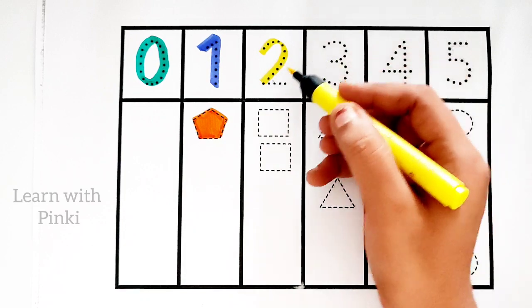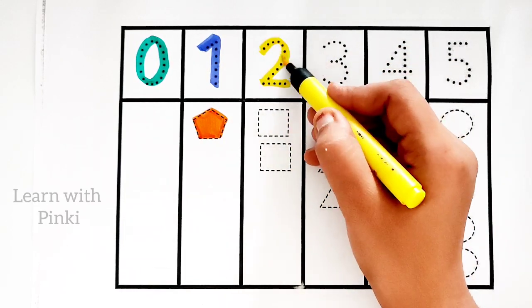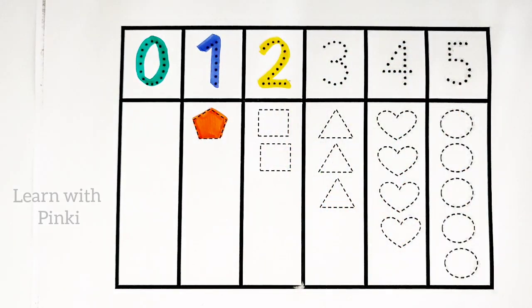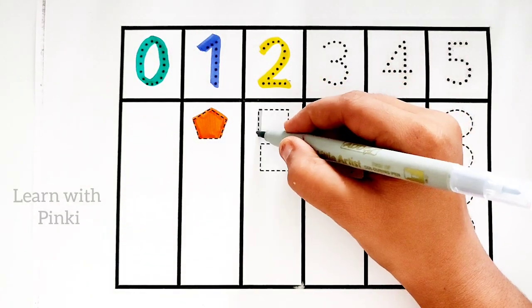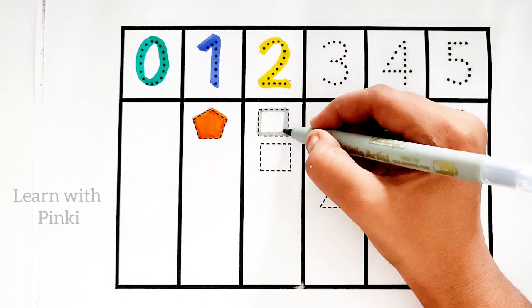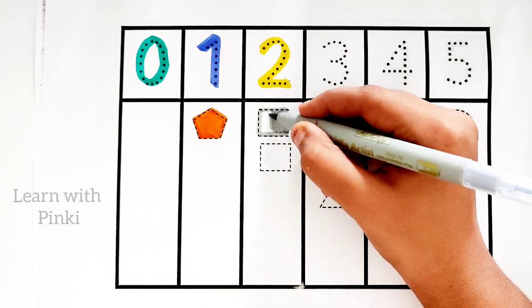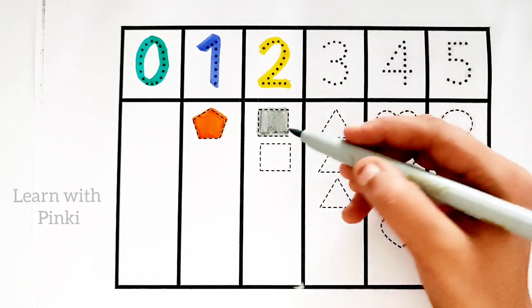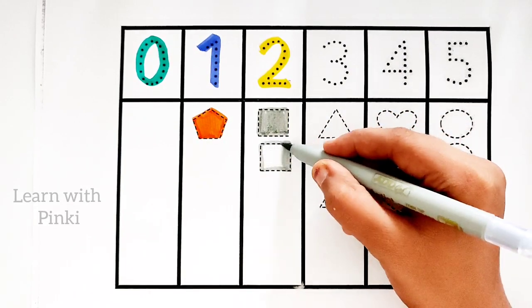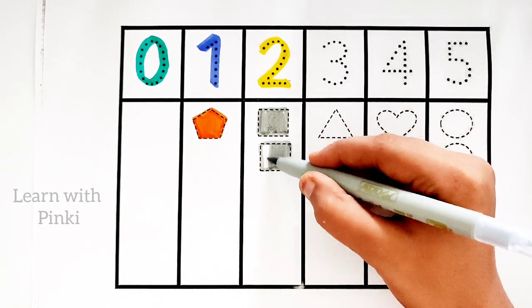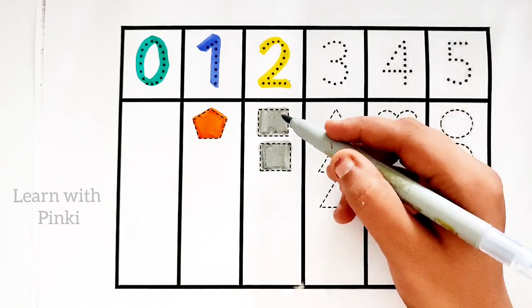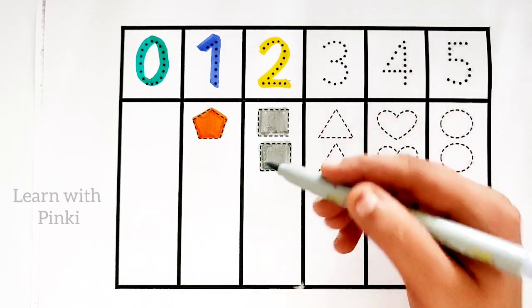Yellow color, number 2, yellow color, number 2. Gray color, 1 square, 2 squares. 1, 2, 2 squares.